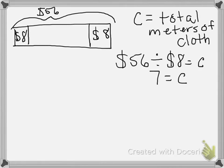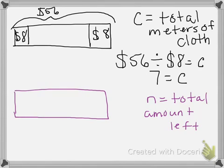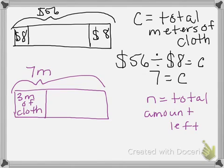So our new diagram, our new unknown, is total amount left. And our picture begins with a tape diagram knowing that she had a total of 7 meters and used 3 meters of cloth for her dress.